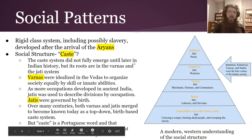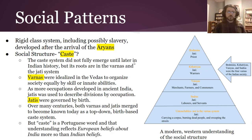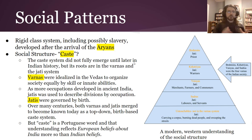And over time, as more and more occupations developed, you had a set of further divisions called the Jatis. Those are more about what you do for a job, and those were very controlled through birth — you would be born into one of those.